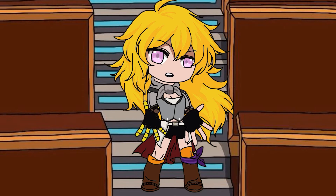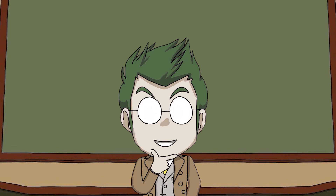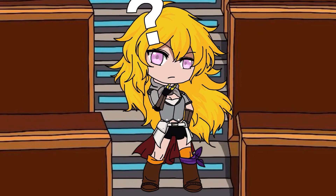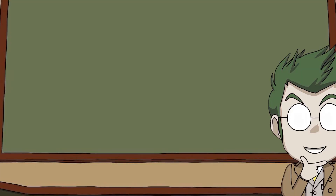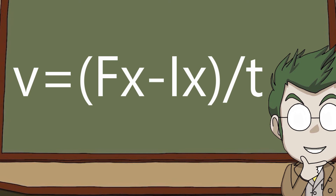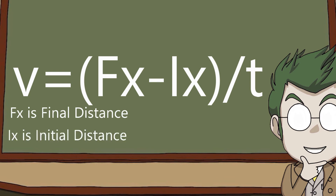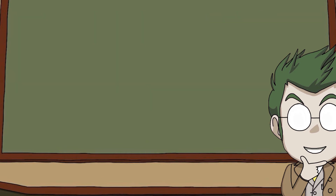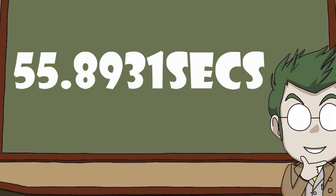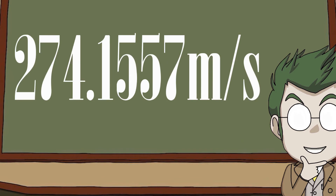A vacuum? Like a Henry or a Dyson? Kind of, but being in a constant zero atmospheres in a completely theoretical state. You don't have to understand this bit, just follow along. Now, we can work out Atlas's velocity in a vacuum using this. FX is the final distance and IX is initial distance. The final distance is 15,323.41327 meters and the initial distance is 0 meters, because that's the point at which we will start falling from. And with the time we just calculated of 55.8931 seconds, we get a velocity of 274.1557 meters per second.